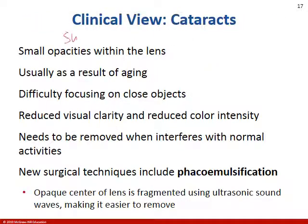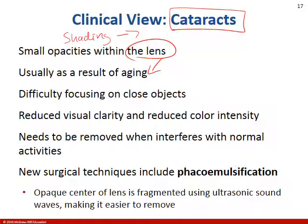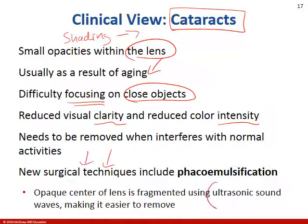We can have shading issues on the lens — basically property changes of the lens as we age — and we call these cataracts. They cause difficulties focusing on objects close up, can affect clarity and color intensity. We do have surgical techniques where we can use ultrasound to break apart these shaded areas.